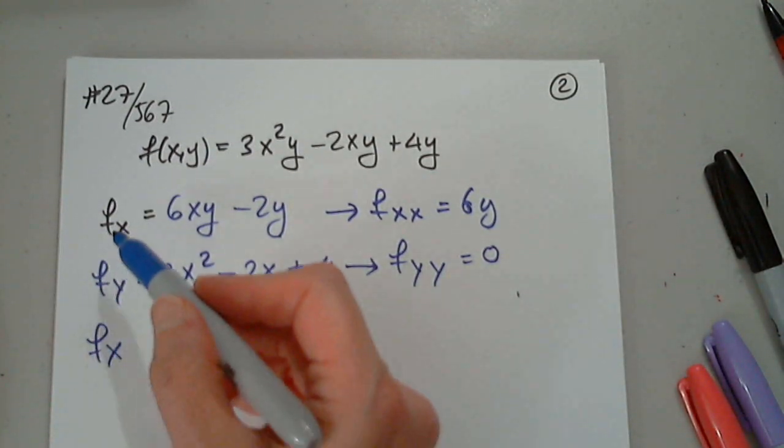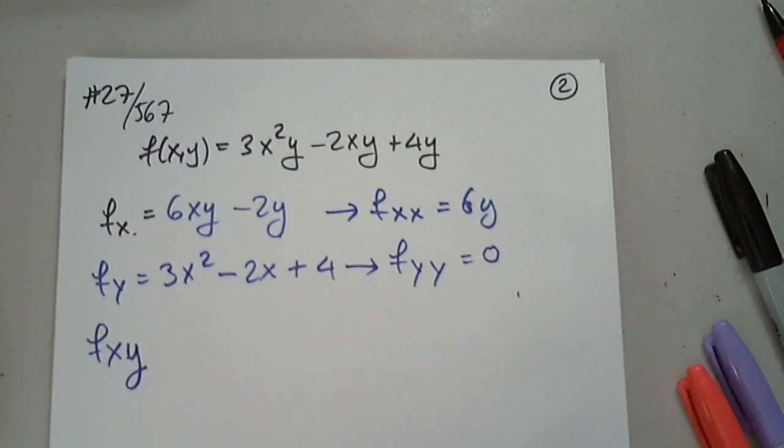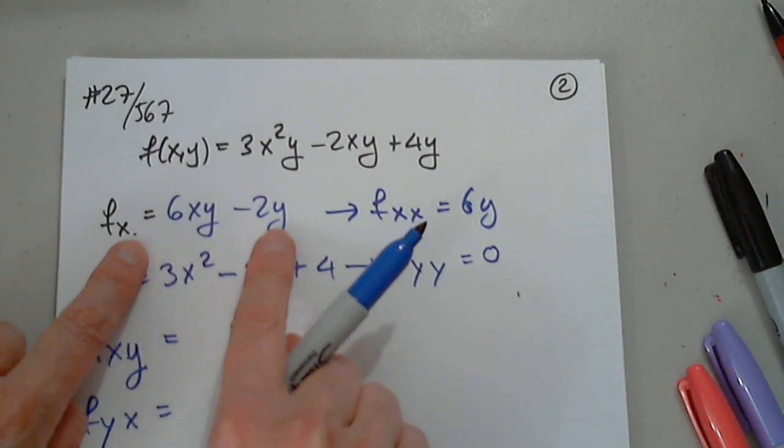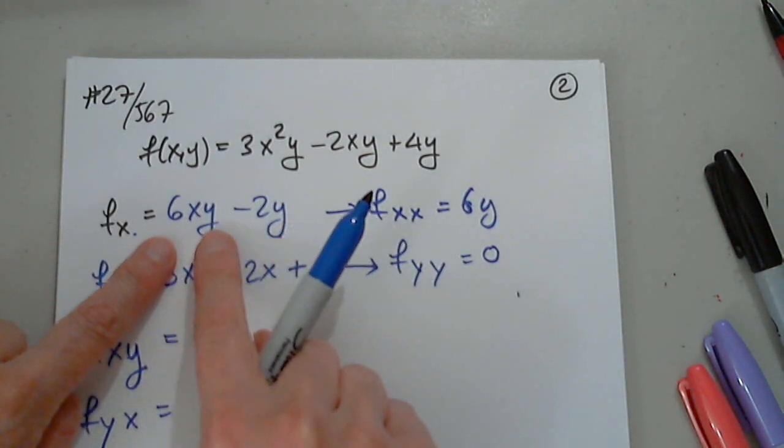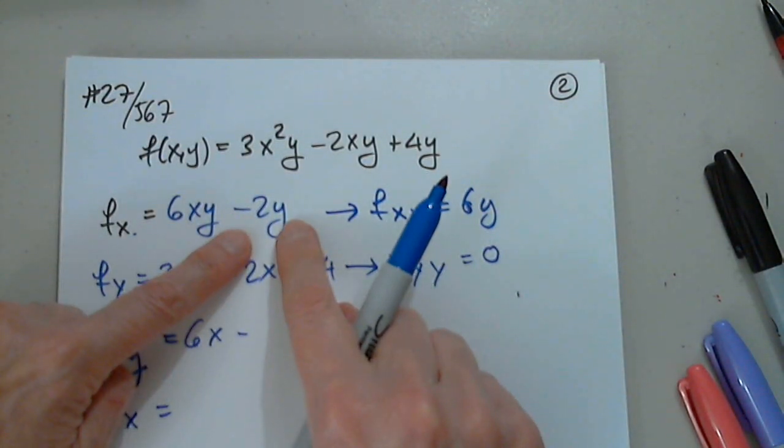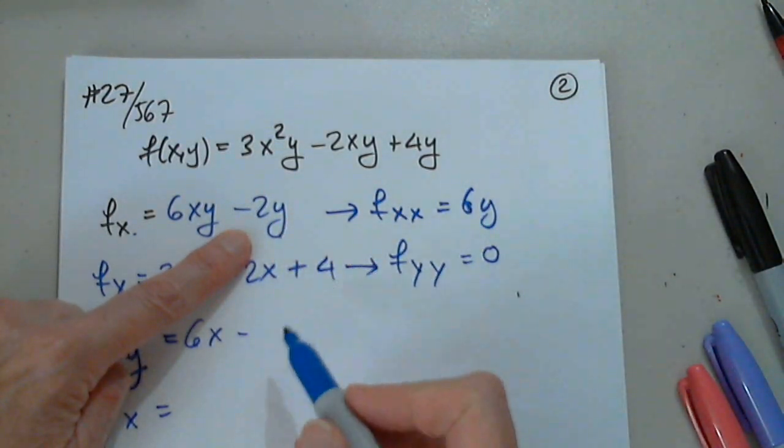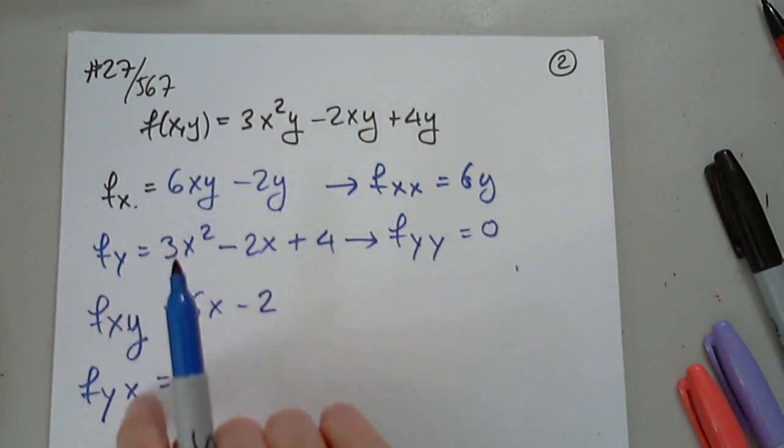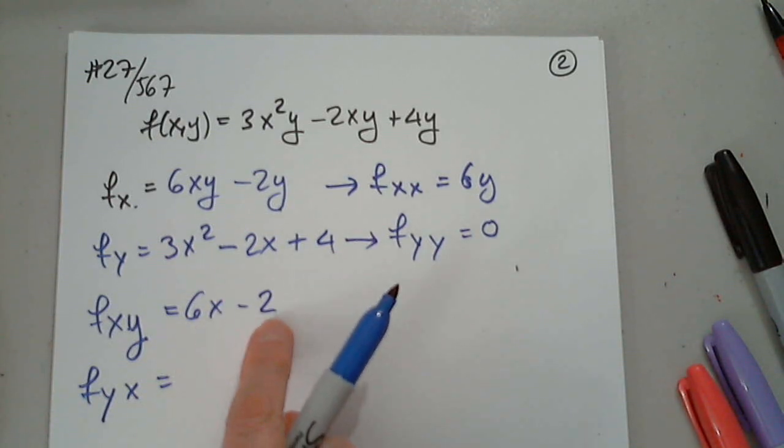So now we want to differentiate fx with respect to y. And then fy with respect to x. So we are differentiating this with respect to y. 6x. That's it. Minus with respect to y. Negative 2. Perfect. So now we differentiate fy with respect to x. If we don't get the same thing, something is terribly wrong. So let's see.